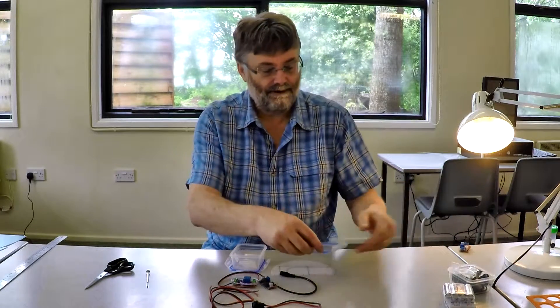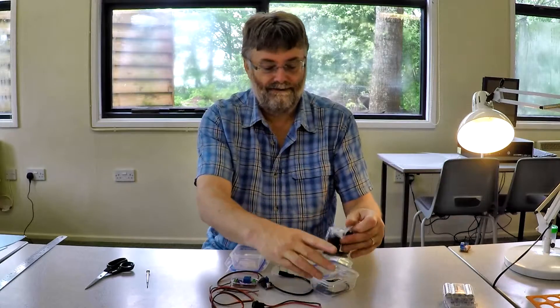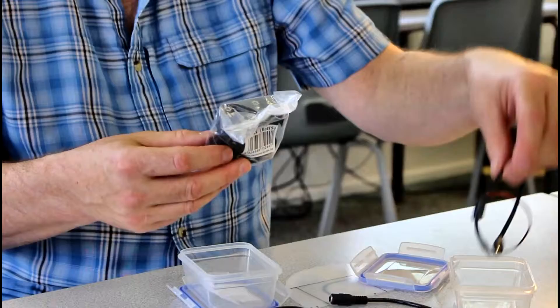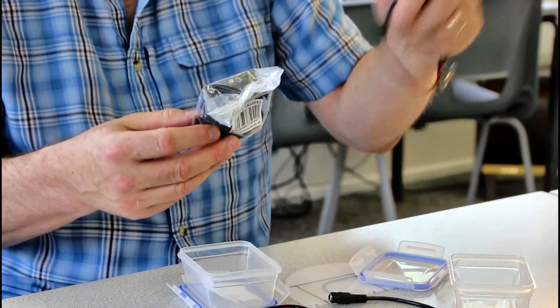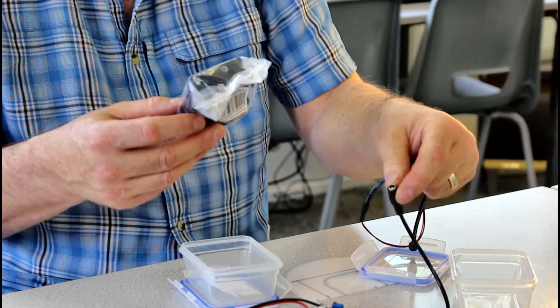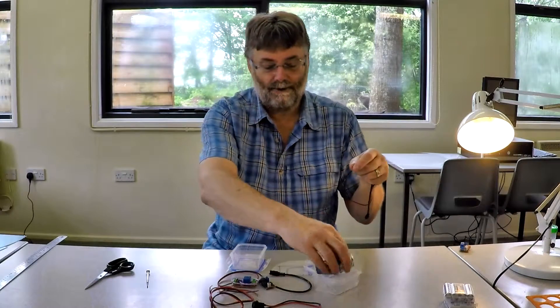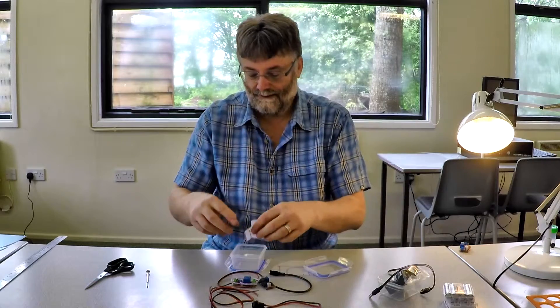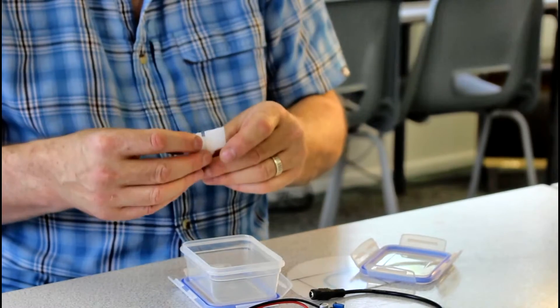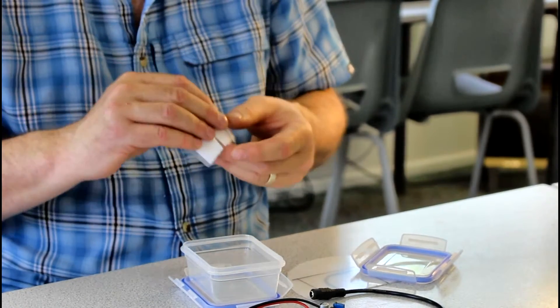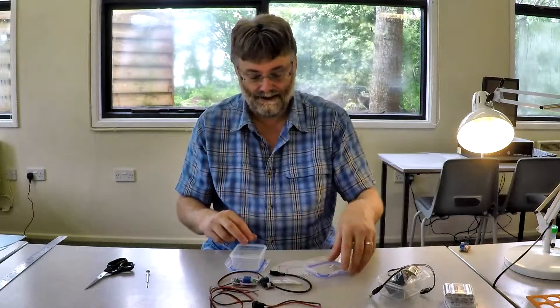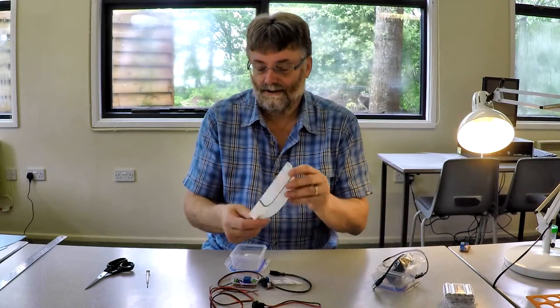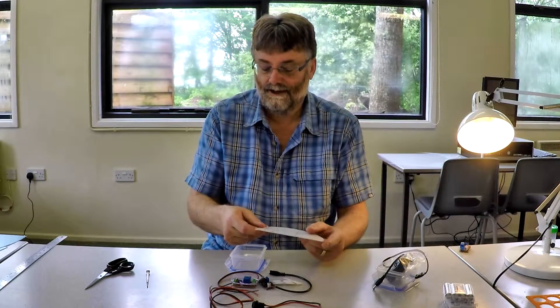Over here, we have a battery holder and the suitable connector to connect the battery to the power input of our boost buck regulator. We also have a few little bits of Velcro that we're going to use to stick everything into position. And the very final thing that we have is a little scrap of the PETG from earlier.